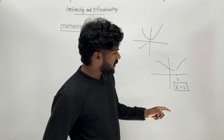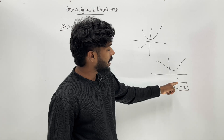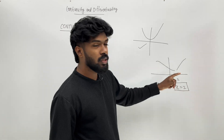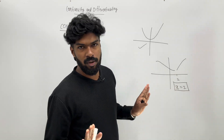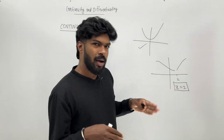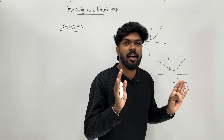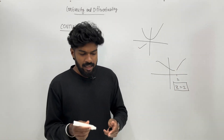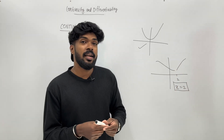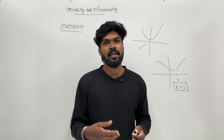Now, on the other part of the function, it is continuous — x equal to 1, and the point is continuous. So this function is continuous. If you have a function that is continuous, then you can say it is continuous.